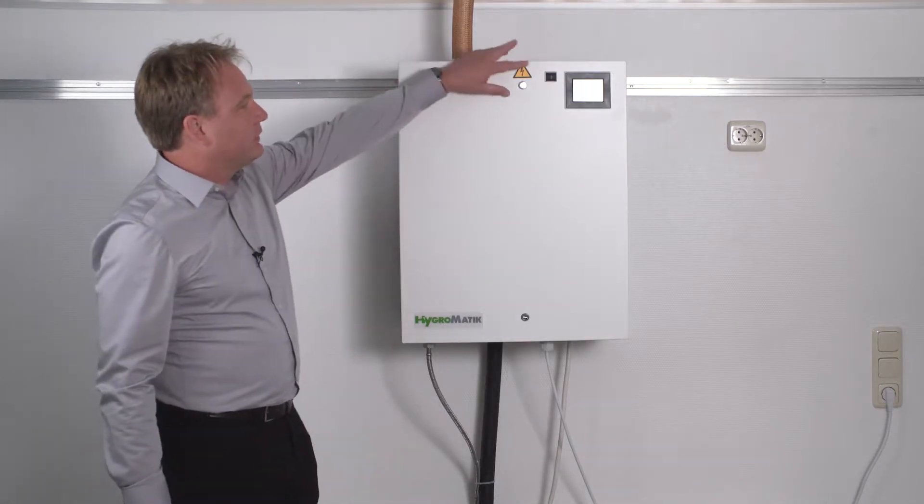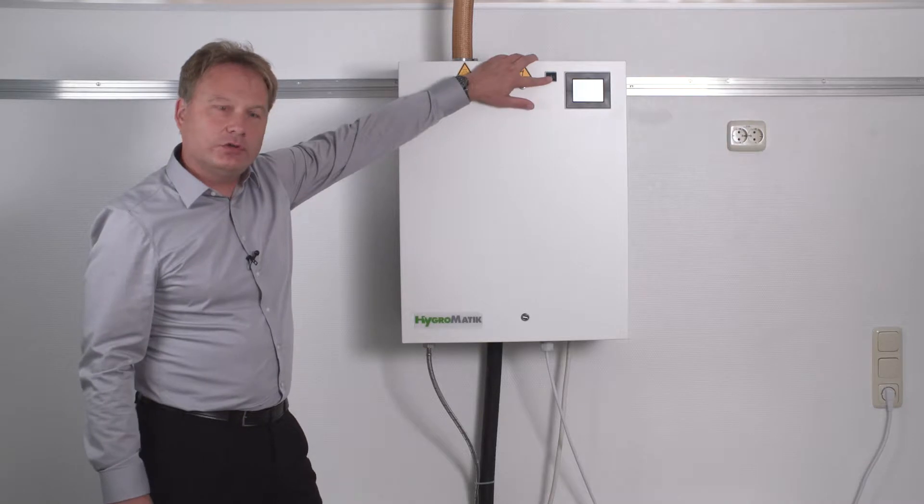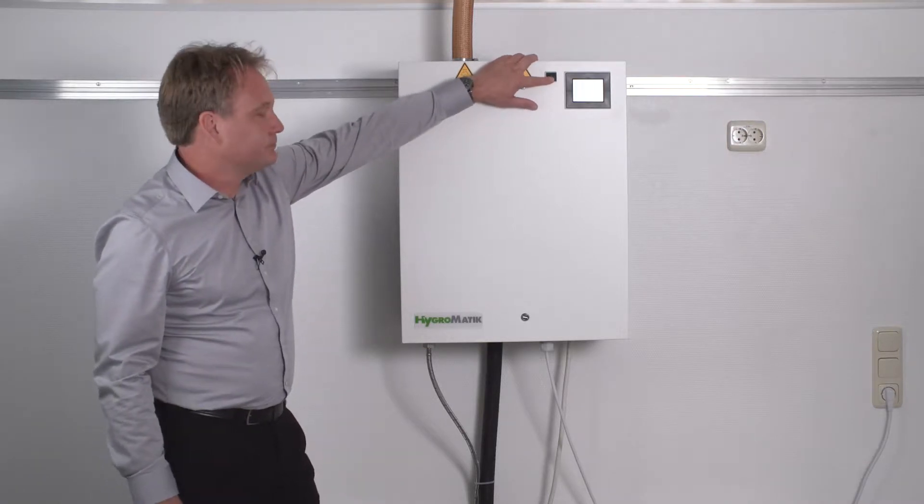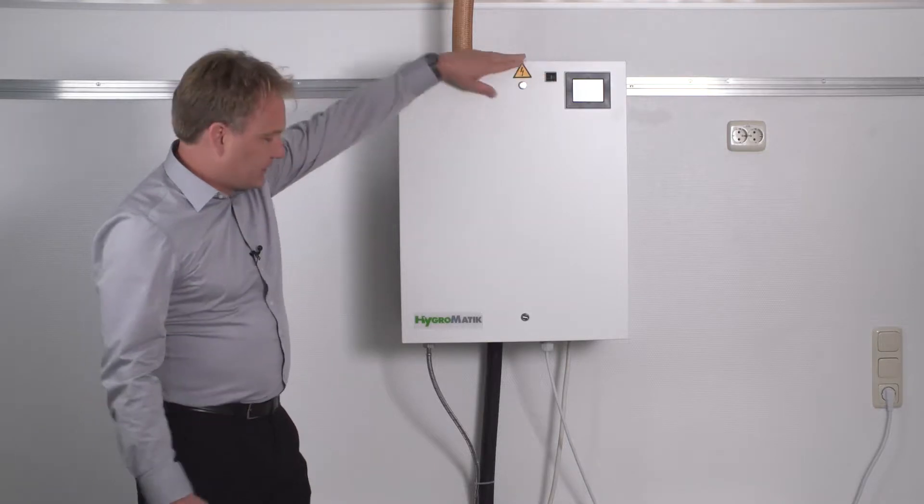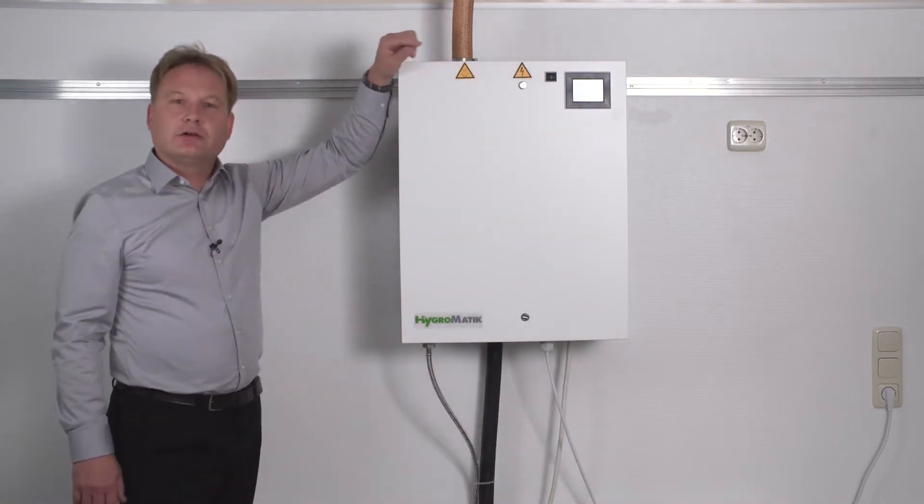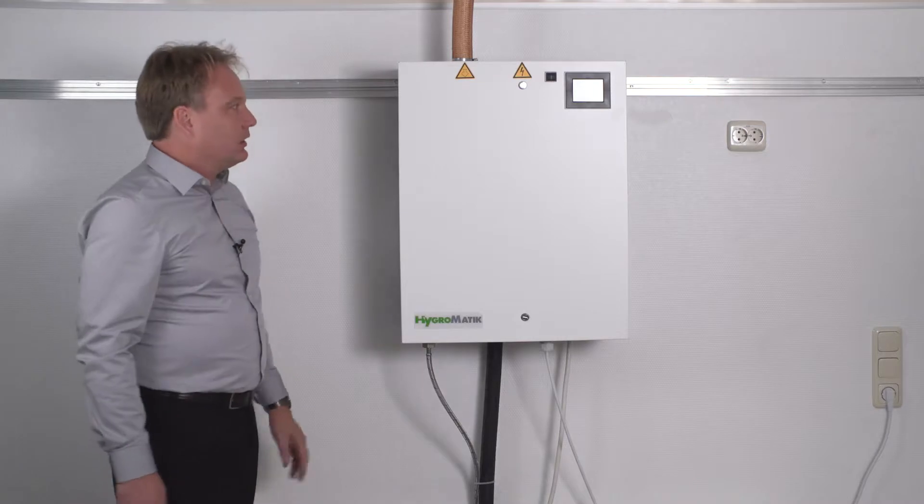That can easily be done by pressing down the control switch to position 2 and keeping it pressed. Now the pump has pumped the water out of the steam cylinder. The steam cylinder is now empty.